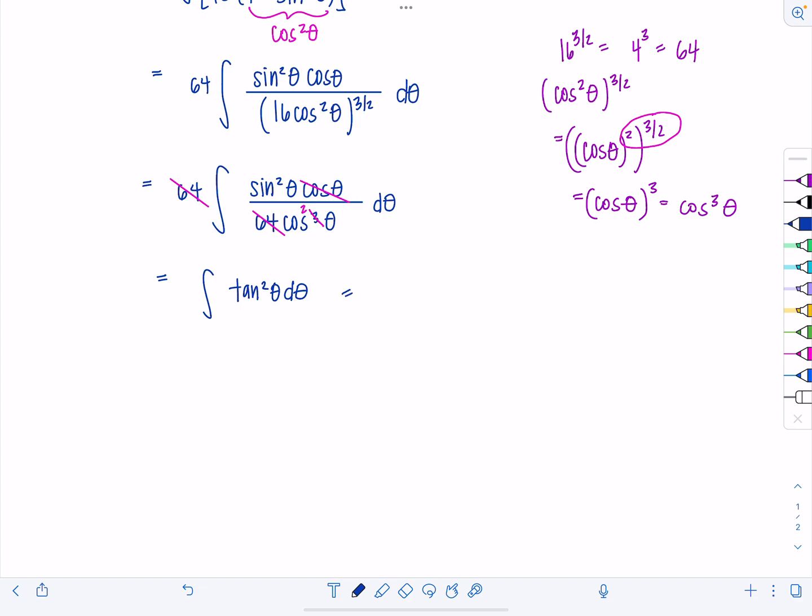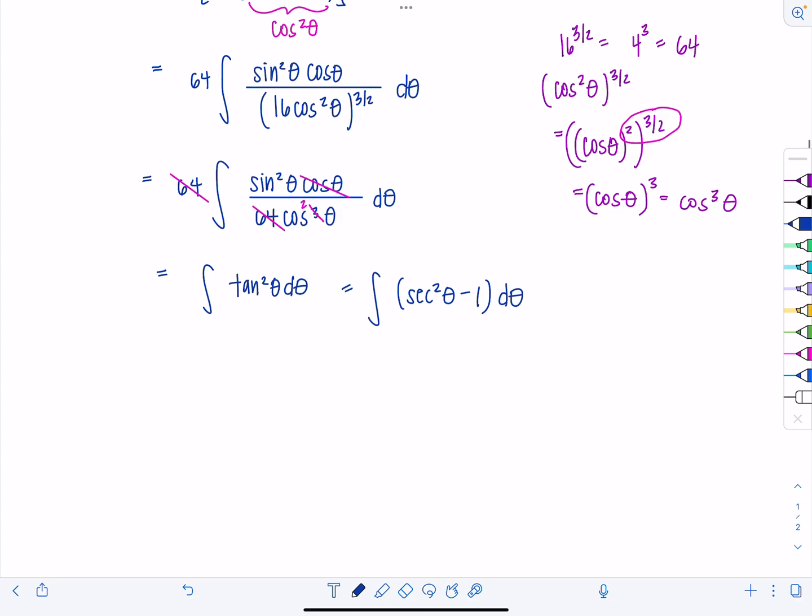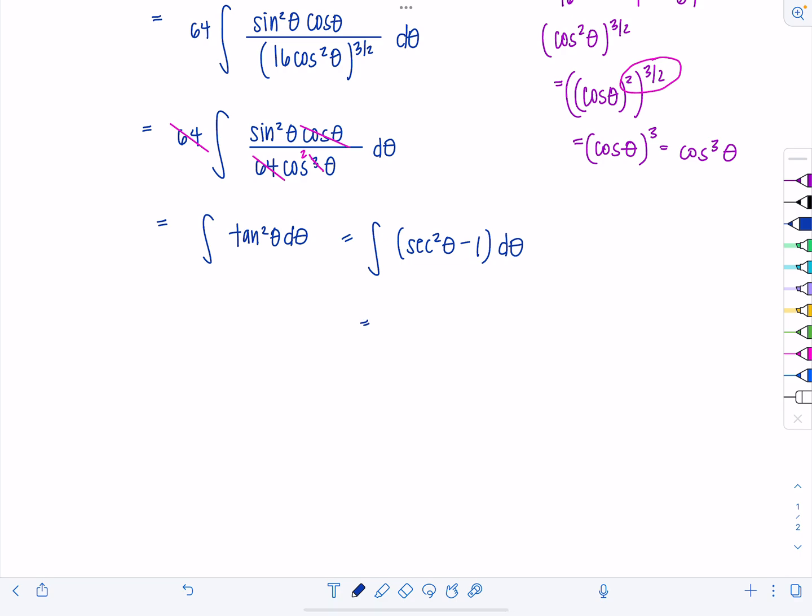Do I know the antiderivative of tangent squared theta? No, but let me use a trig identity. I'm going to replace tangent squared theta with secant squared theta minus 1 d theta. And this I can easily integrate term by term. Antiderivative of secant squared theta, that's tangent theta, minus antiderivative of 1 is just theta plus c.